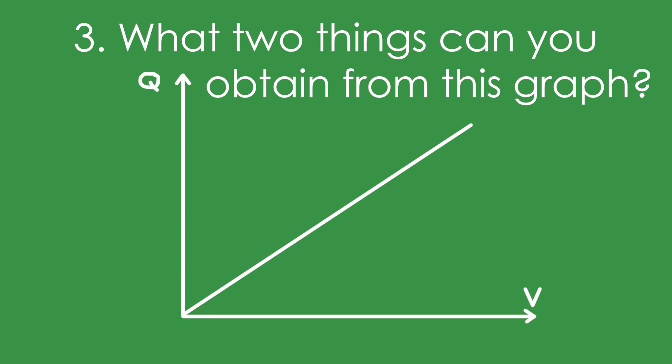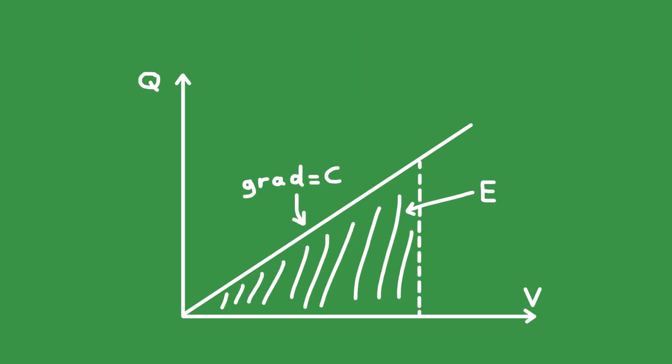Three, what two things can you obtain from this graph? The gradient is the capacitance and the area under the graph is the energy stored.